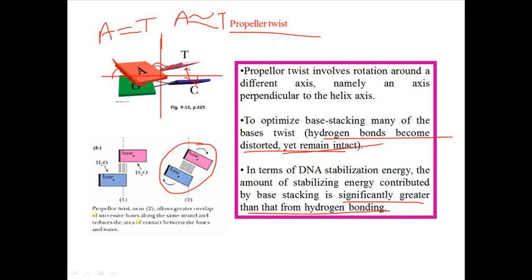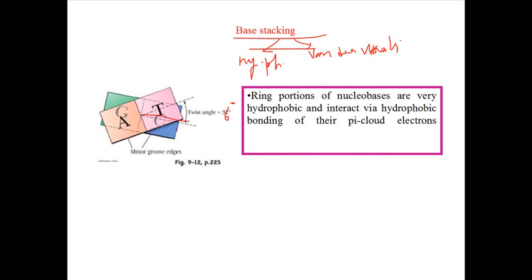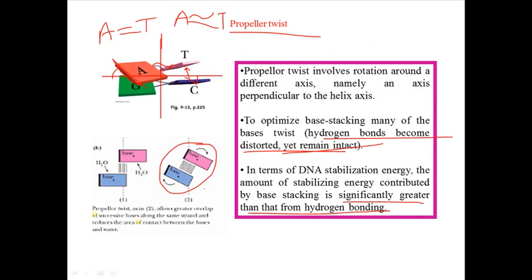In the first situation, the 36-degree twist helps the bases to form hydrogen bonds. After the formation of the hydrogen bond,